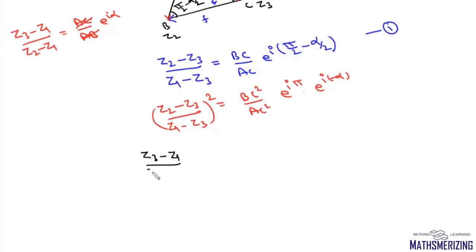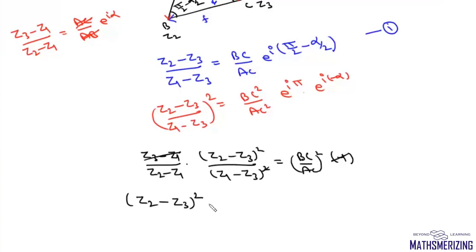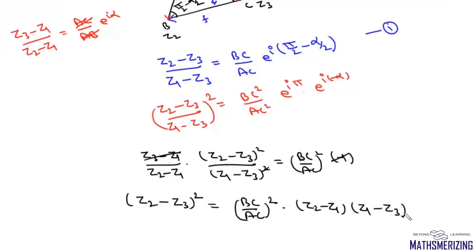Multiplying gives z3 minus z1 upon z2 minus z1 times z2 minus z3 whole squared upon z1 minus z3 whole squared equals BC upon AC whole squared times BC upon AC whole squared. Since e to the power iota pi is minus one, and cancelling z1 minus z3 and the minus sign, we get z2 minus z3 whole squared equals BC upon AC whole squared times z2 minus z1 times z1 minus z3.